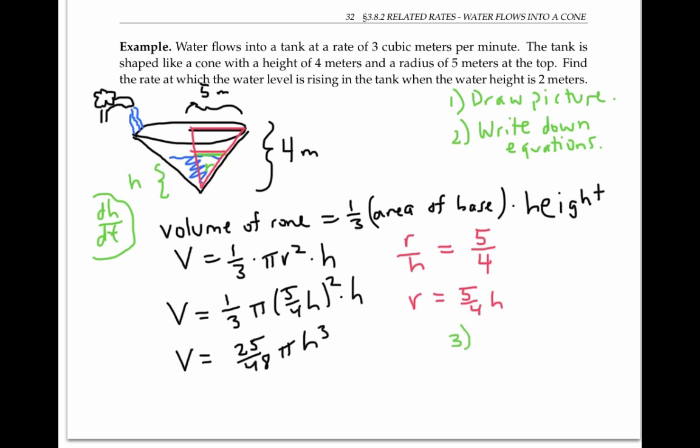Now we're going to derive both sides of the equation with respect to time t to get rates of change into the problem. Remember that we're thinking of the volume of water and the height of water as functions of time t. We get dV/dt equals 25/48 pi times 3 h squared dh/dt.